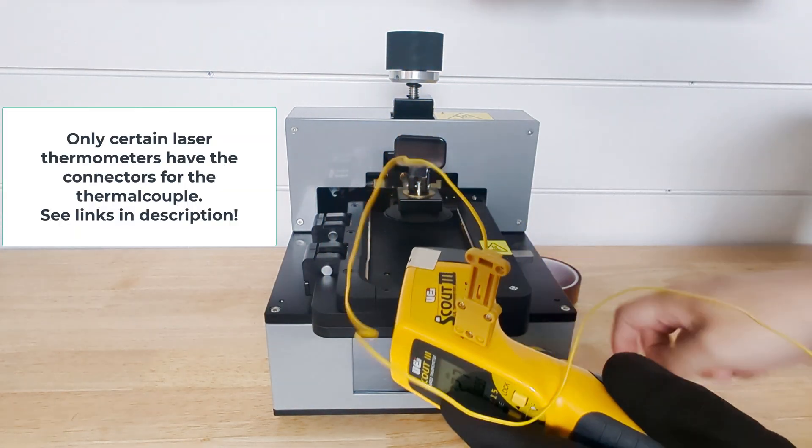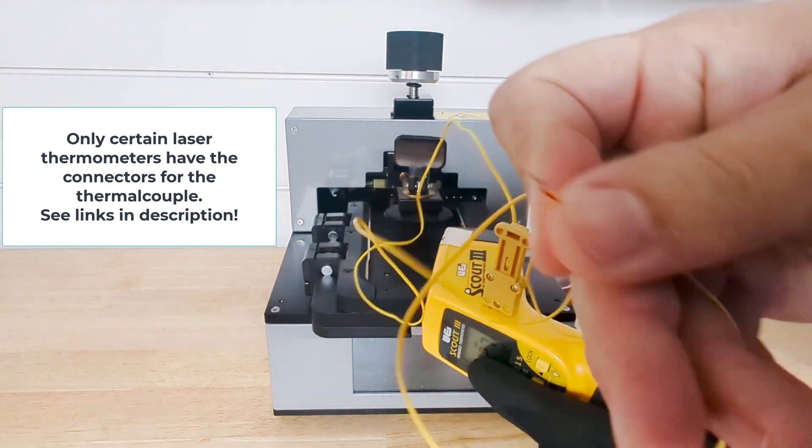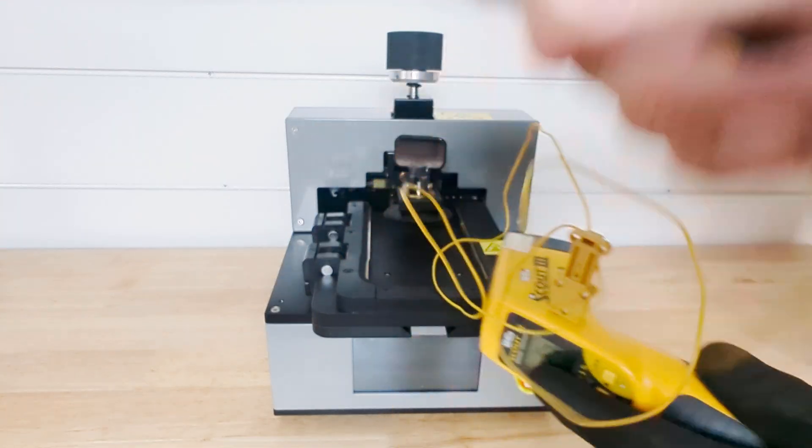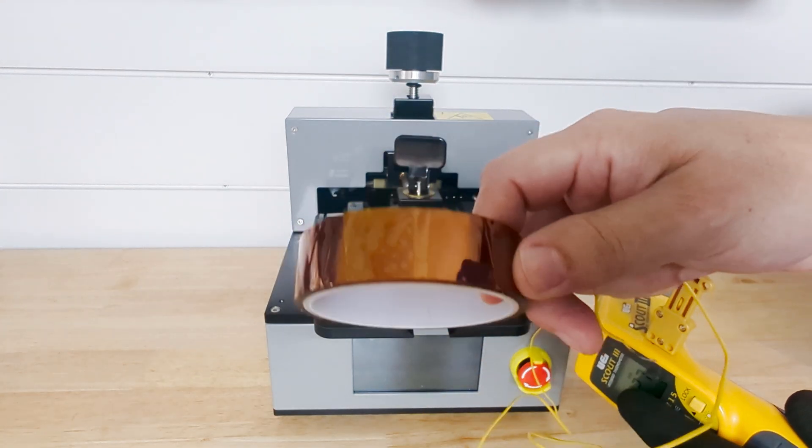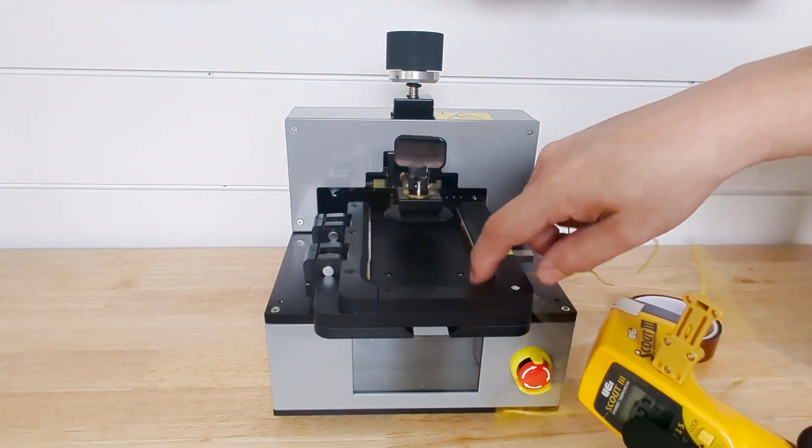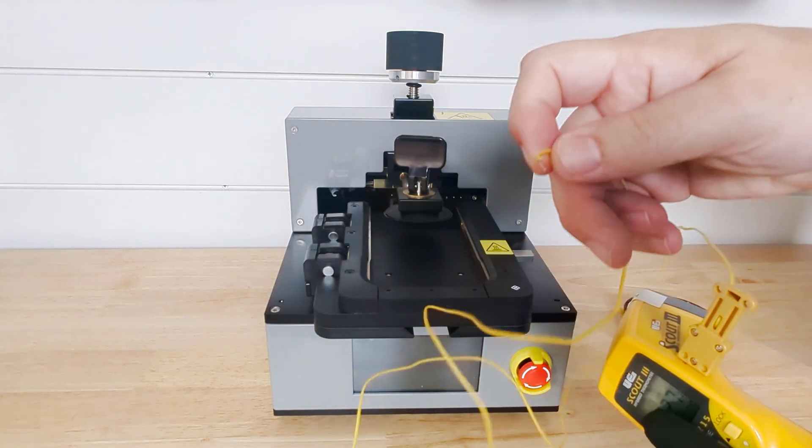And then we'll just connect it there. And then on the end, we have this little wire that we are going to basically tape there, and we're going to use our heat resistant tape to hold it in there and see what is the actual temperature we're going to get.